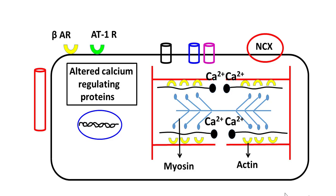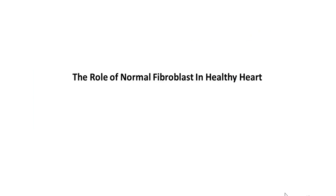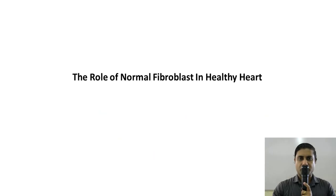Prolonged and sustained stimulation of the beta-adrenergic receptor and the AT1 receptor also causes this cell to become more prone to apoptosis. Next, we need to understand the effects of prolonged and sustained stimulation of beta-adrenergic receptors and AT1 receptors in the cardiac fibroblast.